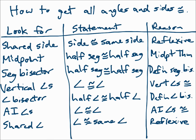How do you get all angles and sides congruent? Well, you're not always given all the information you need, but there are things to look for to get the extra pieces. Pause the video and jot this chart down because it will be extremely useful for getting the other pieces. It tells you what to look for, the statement you will make in the proof, and the reason for making that statement.